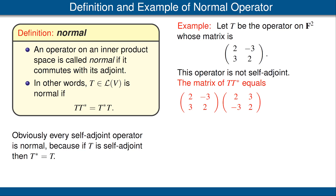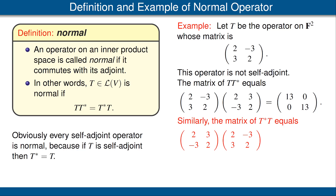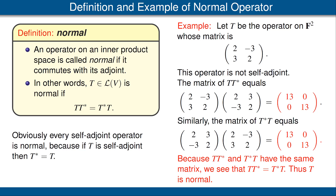Let's compute the matrix of T times the adjoint. We have the matrix of T on the left, the conjugate transpose on the right, and we do the usual matrix multiplication, getting 13 on the diagonals and 0 in the two off-diagonal entries. Now let's compute T*T in the other order, and we get the same matrix. Because T T* and T*T have the same matrix, they must be equal operators — T T* equals T*T. That's the definition of being normal, so this operator T is normal even though it is not self-adjoint.